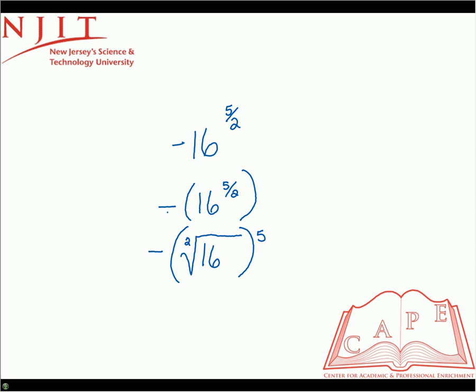So we can rewrite it now: negative and then the square root of 16 is 4. Negative is still not included though. And then 4 to the fifth. And then our final answer is going to be negative 1024.